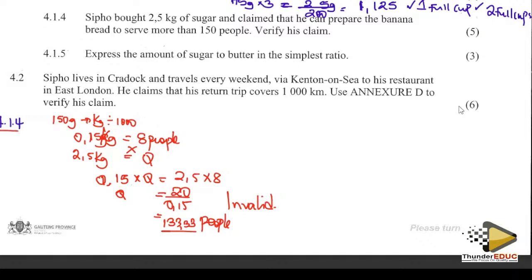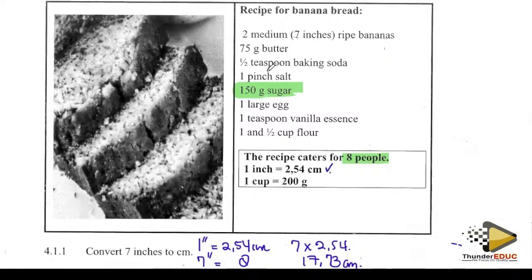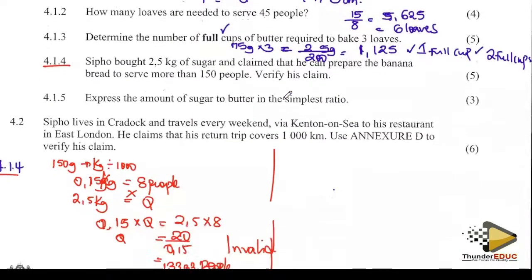Express the amount of sugar to butter in a simplified ratio. Butter is 75 grams, sugar is 150 grams. So 150 : 75, dividing through by the smallest gives 2 : 1. Simply meaning wherever you have two parts of sugar, you have one part of butter.